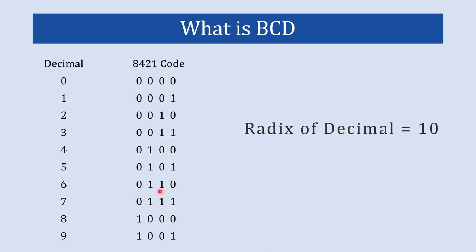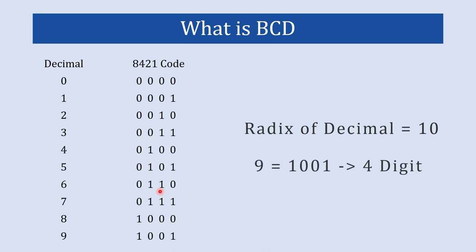Why is it like this? To represent the largest decimal digit, how many binary numbers are we supposed to use? The largest decimal digit is 9, and to represent 9 in binary we are supposed to use a four-digit binary number, that is 1001. So that is why in BCD code each decimal digit is represented by a four-bit binary number. Here in this table you can see how 0 to 9 decimal numbers are represented in 8421 BCD code, and they are all represented in four-bit manner.